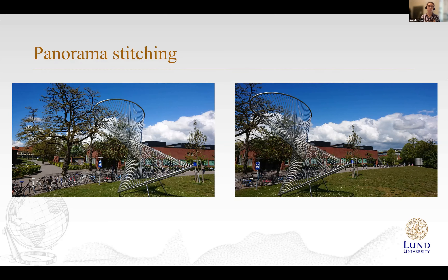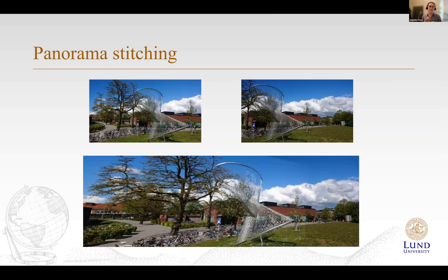Most of you could probably do panorama stitching if given two printed images — you'd identify similar things and lay them on top of each other. The first step is to identify points of interest. Yellow points are not very good because we can't tell which point in the right image corresponds to which in the left. So we want unique points, like the bottom of a pole holding up a tree, a sign, or part of a bike. When we've identified these points, we can merge the images to get a panorama.